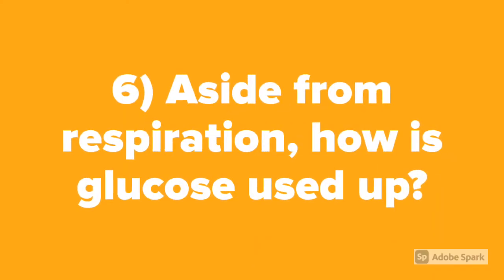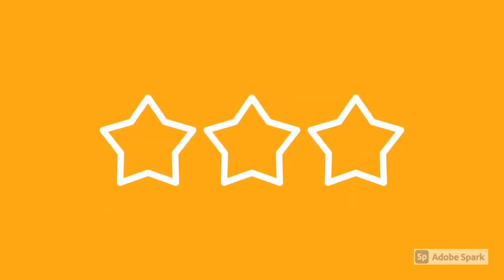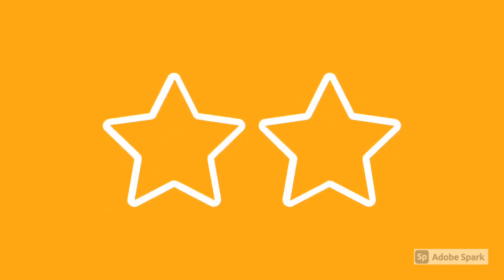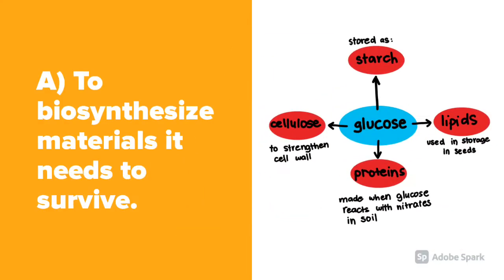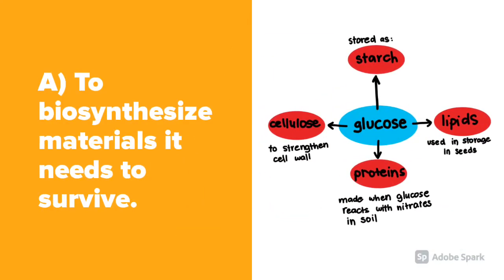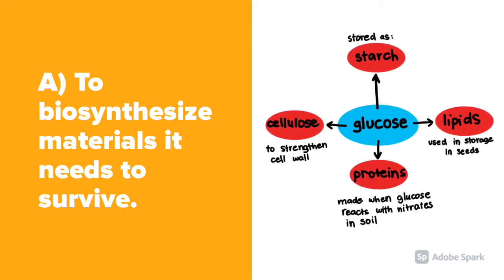Question number 6: Aside from respiration, how is glucose used up? It is used to biosynthesize materials that the plant needs to survive, like turning it into starch, lipids, proteins, and cellulose.